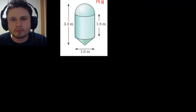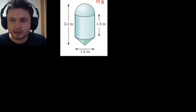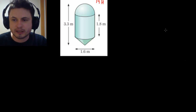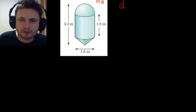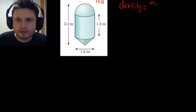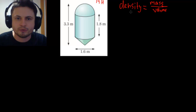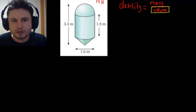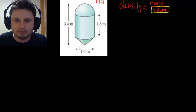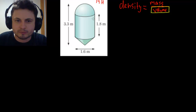For a challenge, there's problem 14h on page 439 involving a silo where you store grain. The problem includes finding density — mass divided by volume — but we'll focus on finding the total volume of the silo. The silo has a total height of 3.3 meters, a diameter of 1.6 meters, and the cylindrical section is 1.8 meters tall.